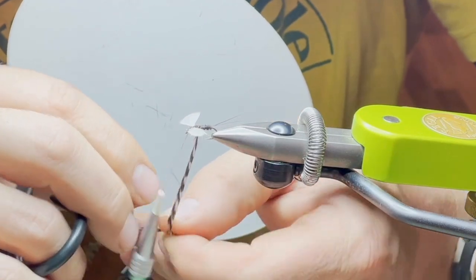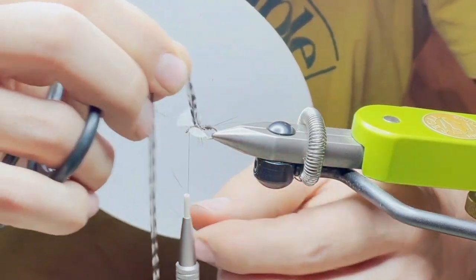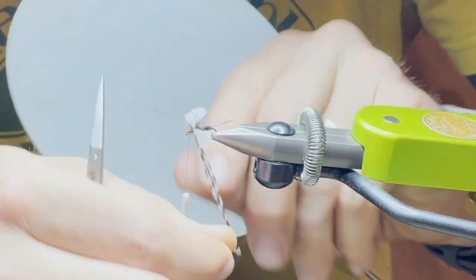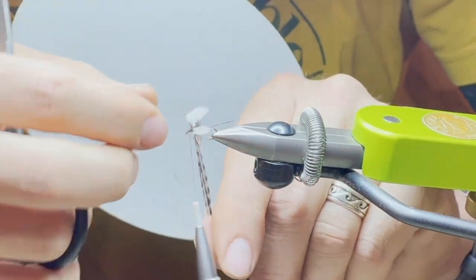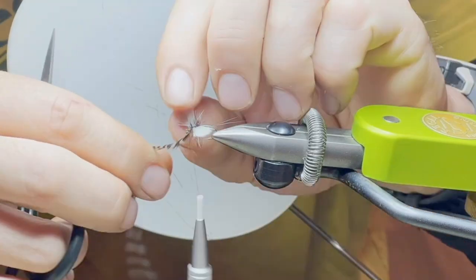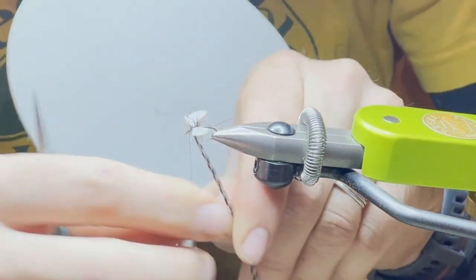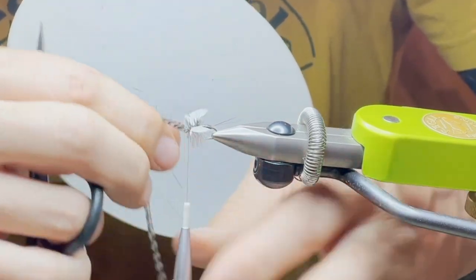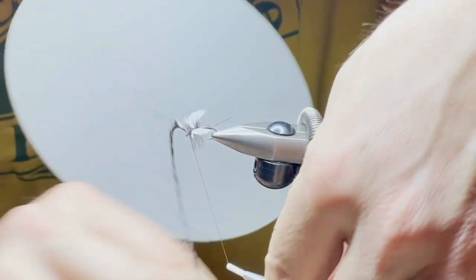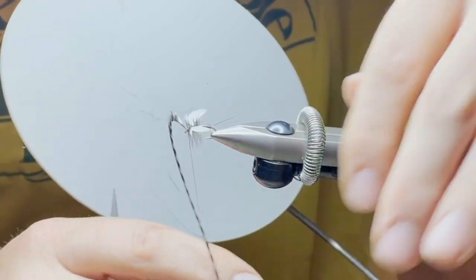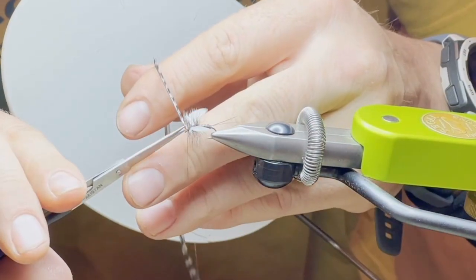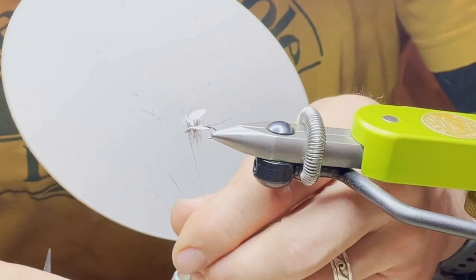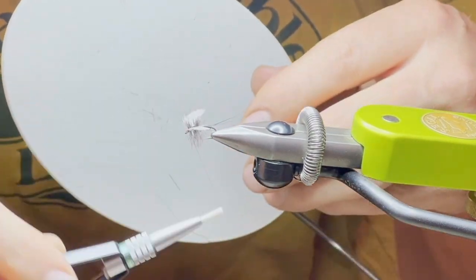We're going to do—I usually do two wraps in the back like that, two wraps in the front. This is a fly that really likes a good hackle because that's going to do all your floating for you. There's not much else on here to float. Do two and then we'll tie it off halfway up that third wrap.